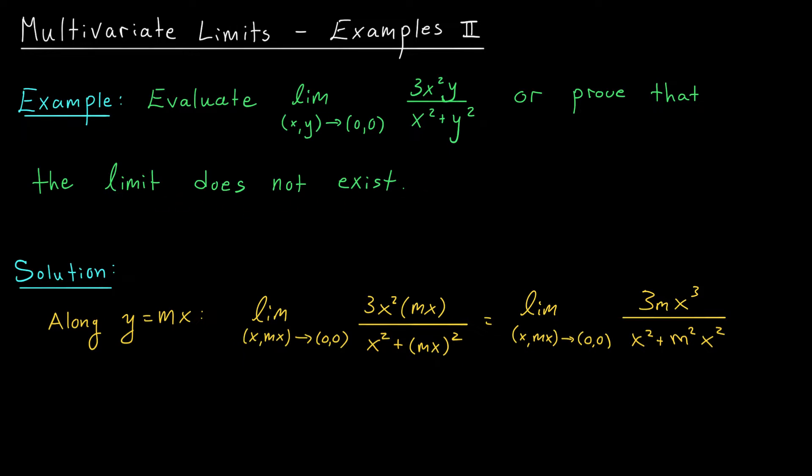Now you can see I've already started thinking about this example by testing a few paths through the origin. I didn't write it down, but I started by thinking about the limit along the lines x equals 0 or y equals 0. But you can see that if we set x or y equal to 0, the numerator of this fraction is going to be 0, and therefore the whole fraction is 0. Consequently, the limit along one of these lines will be 0 as well.